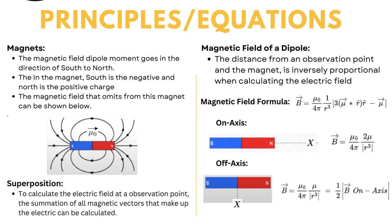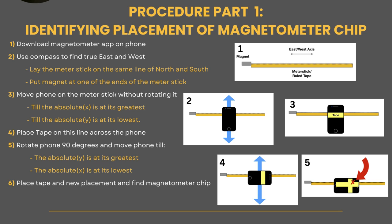For the procedure in part one, we're going to download the app in order to collect data, and then we're going to lay the ruler east to west, which is important to try to have the effects of Earth's magnetic field not affect it as much. Then we're going to move the phone up and down until the absolute x is at its greatest and absolute y is at its lowest, and then put a piece of tape there.